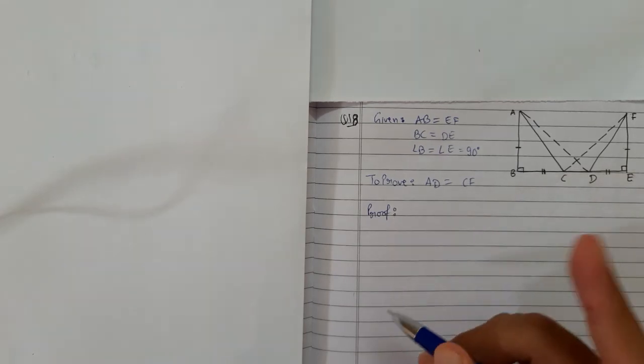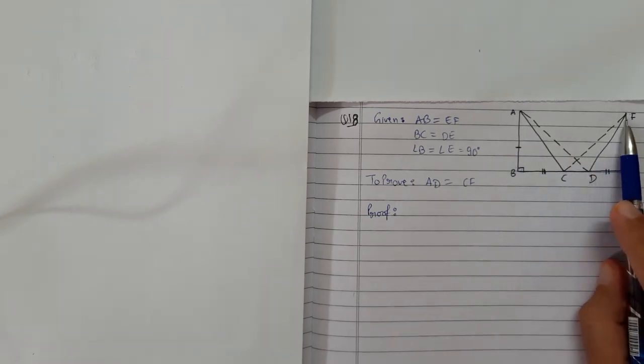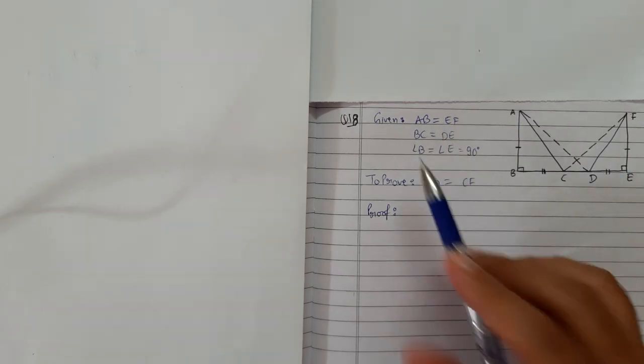At this point remember one thing: what do we need to prove and what we have. We need to prove that AD equals CF. Make sure these two things should be there. Without this given information we cannot prove that, so these things should also be there.